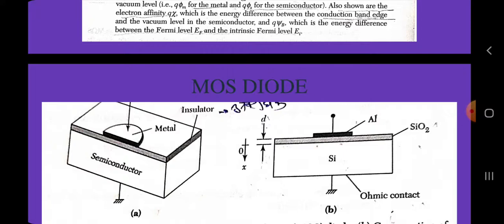The energy band diagram of an ideal P-type semiconductor MOS diode at V equal to 0 is shown in this diagram. The work function is the energy difference between the Fermi level and the vacuum level: Q phi M for metal and Q phi S for semiconductor. Also shown are the electron affinity Q chi, which is the energy difference between the conduction band edge and the vacuum level in the semiconductor, and Q psi B, which is the energy difference between the Fermi energy EF and the intrinsic Fermi level EI.